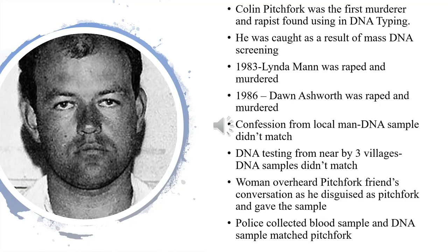In 1986, another 15-year-old girl, Dawn Ashworth, was also found missing. The next day, she was also found on the footpath, raped. Both of these crimes occurred in similar circumstances and the blood type was the same.